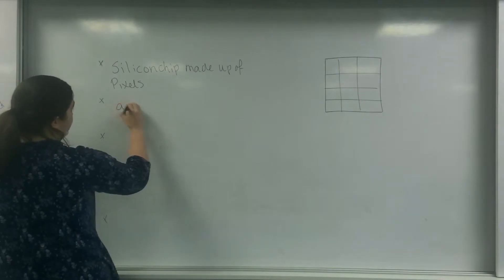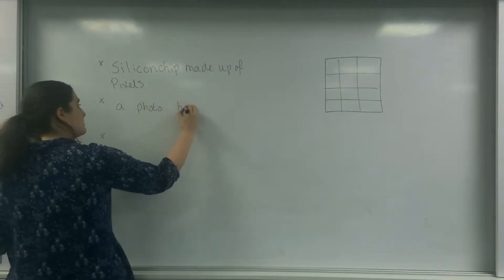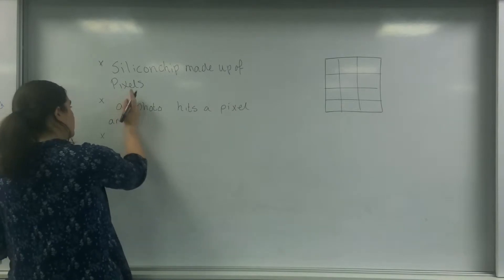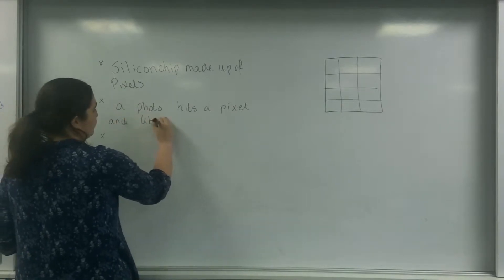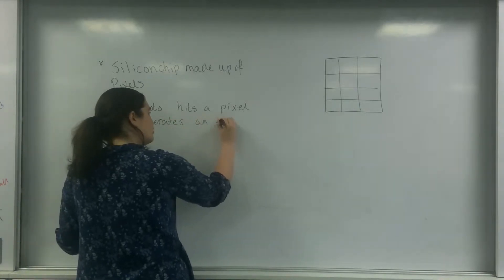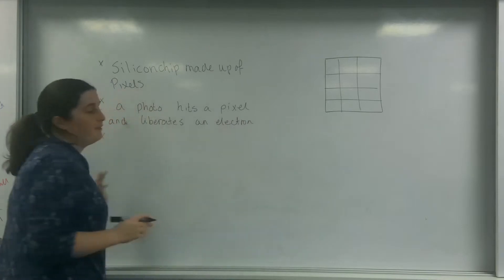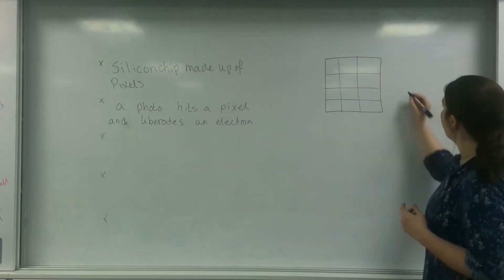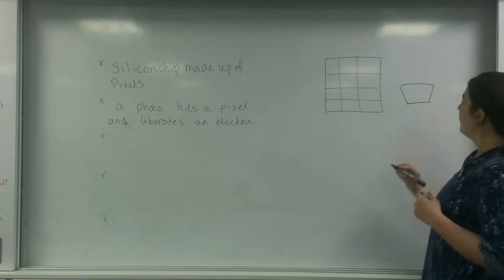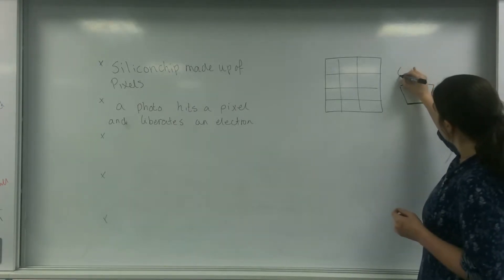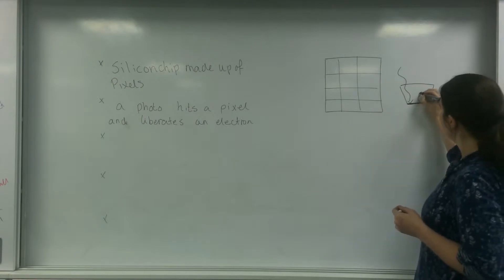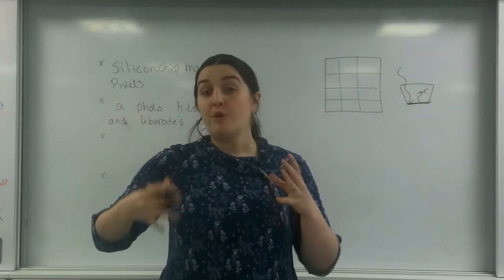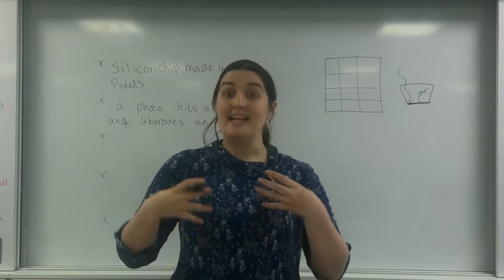A photon hits a pixel and liberates an electron. Underneath these pixels is a photoelectric material. So if I just zoom in on one on the side, this is a pixel, it has a photoelectric material. A photon comes in and an electron is liberated.